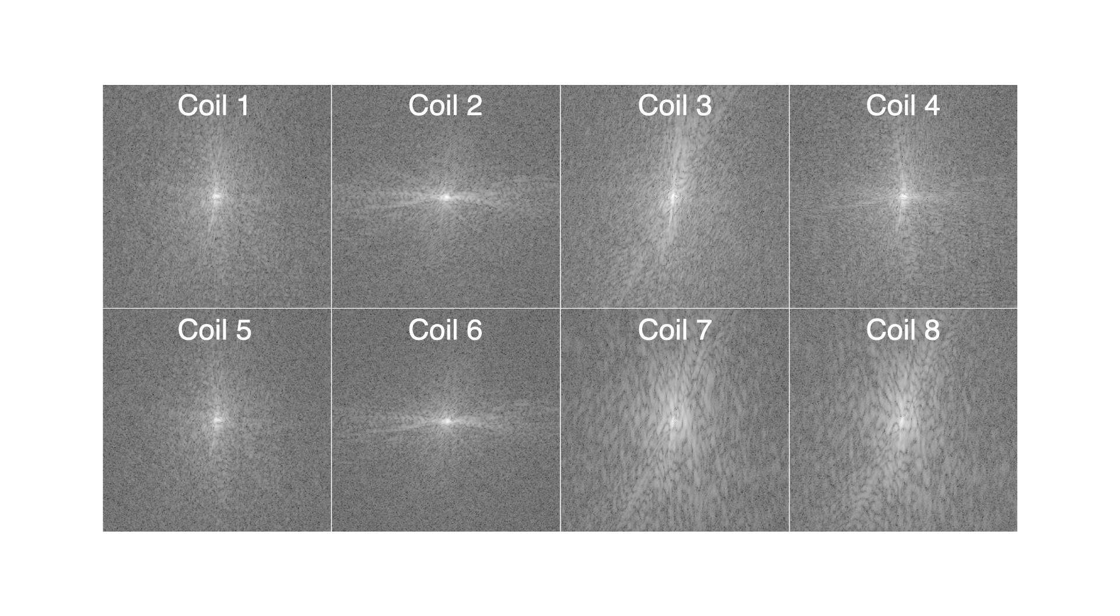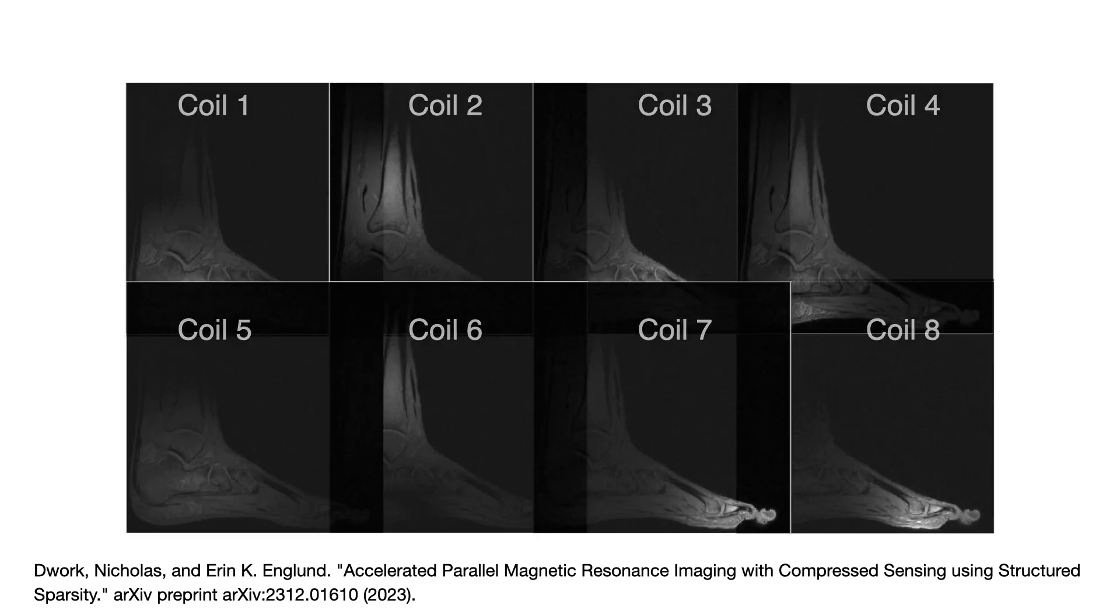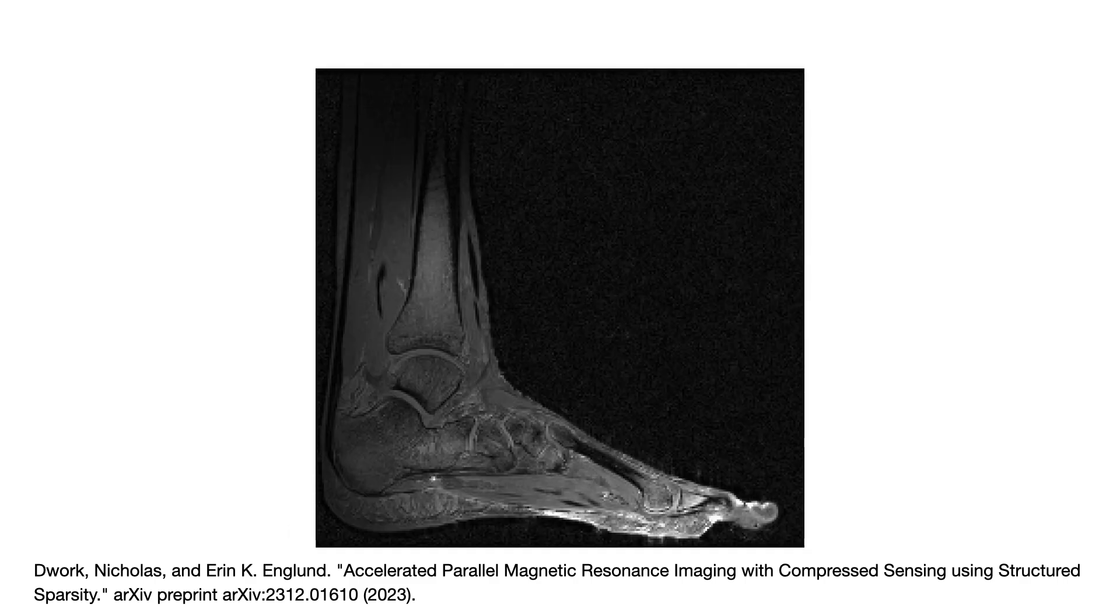Here are the Fourier data collected by an eight-coil array, and if we perform an inverse discrete Fourier transform on this, we see that these coils were placed around the ankle and foot of a patient. We must then do something to combine these into a single image.